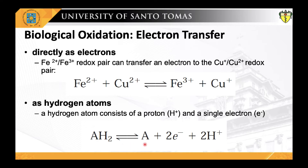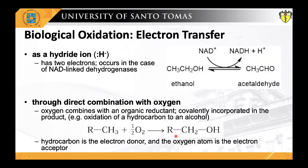The electron transferred arises from the removal of a hydrogen atom that includes both a proton and an electron — this is not just a proton as occurs in acid dissociation. Third, electrons are transferred in the form of a hydride ion, which carries two electrons — this occurs in NAD-linked dehydrogenases. Fourth, electrons are transferred via direct combination with oxygen, where oxygen combines with an organic reductant and is covalently incorporated into the product, as in the oxidation of a hydrocarbon to an alcohol; the hydrocarbon is the electron donor and oxygen is the electron acceptor.